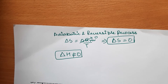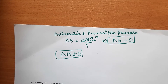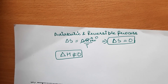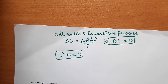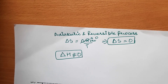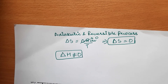For an adiabatic and reversible process, heat transfer does not take place, so ΔQ = 0. Since ΔS = ΔQ/T, and ΔQ is zero, ΔS (entropy change) is also zero. However, for an adiabatic and reversible process, the enthalpy change ΔH is not equal to zero.